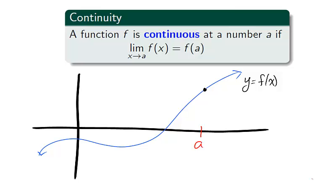That is, we have an uninterrupted flow. The location of the point at x equals a is the one implied by the trend of the previous points. The limit equals the actual value.